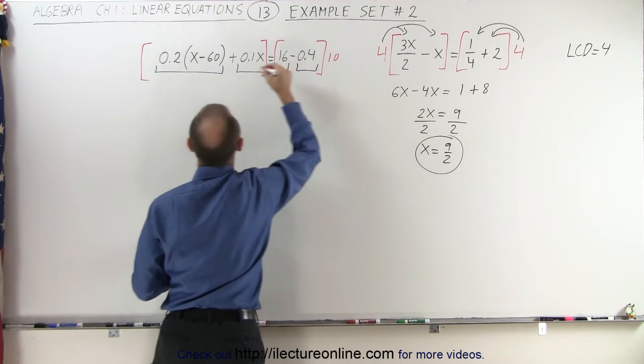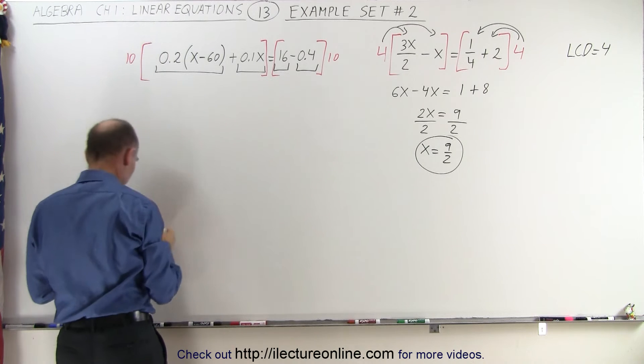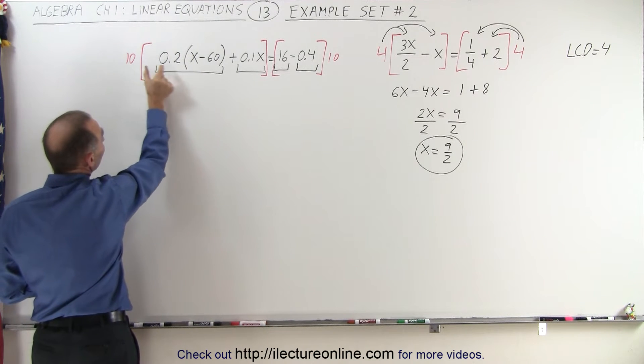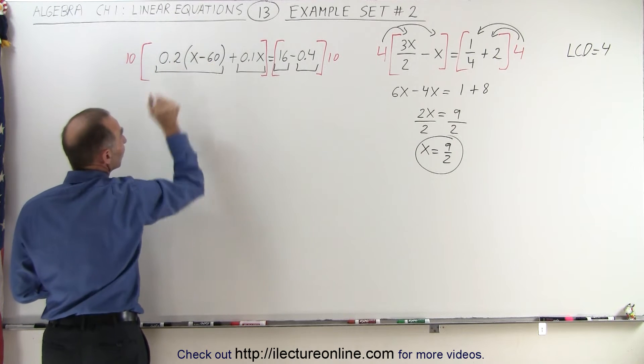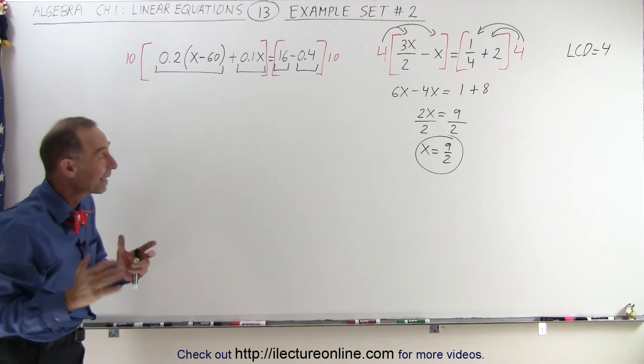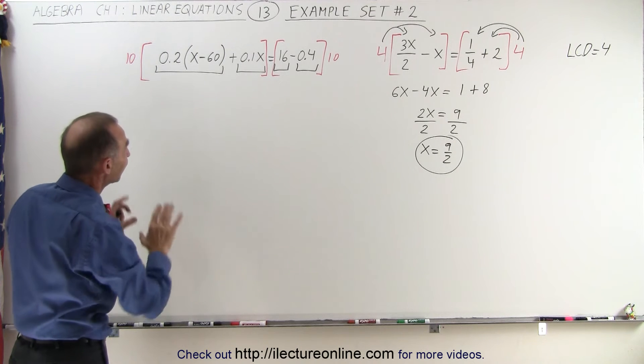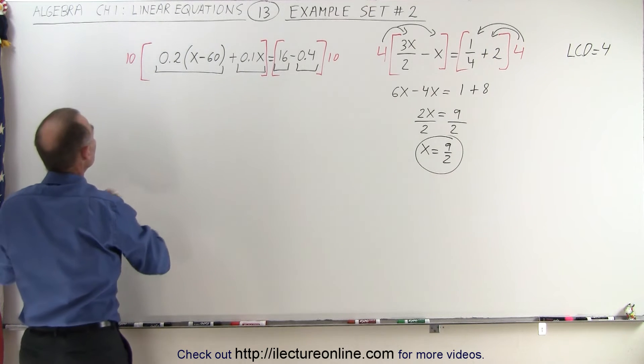So we're going to multiply the right side by 10, and we're going to multiply the left side by 10. Notice I only have to multiply the 10 by the factor of what's inside the parentheses here, so I'm not taking care of the parentheses first, I'm going to multiply both sides by 10 to get rid of the decimals.